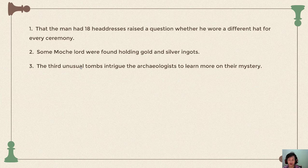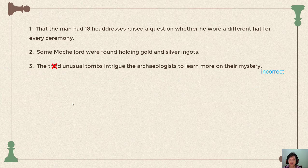Next: 'The third unusual tombs intrigue the archaeologists to learn more on their mystery.' This is incorrect. 'The third' is an ordinal number referring to only one item — the third tomb. But the sentence uses a plural noun 'tombs' and the pronoun 'their,' indicating multiple tombs. So it should be 'the three unusual tombs,' using the cardinal number three.